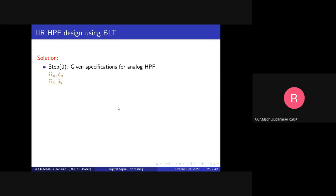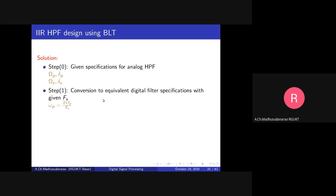The given specifications for the analog high pass filter are omega_p, delta_p, omega_s, and delta_s. Now we will try to convert these into equivalent digital filter specifications for the given sampling rate fs. Using the expression: small omega equals capital Omega divided by capital fs, we get omega_p equals capital Omega_p divided by fs and omega_s equals capital Omega_s divided by fs.